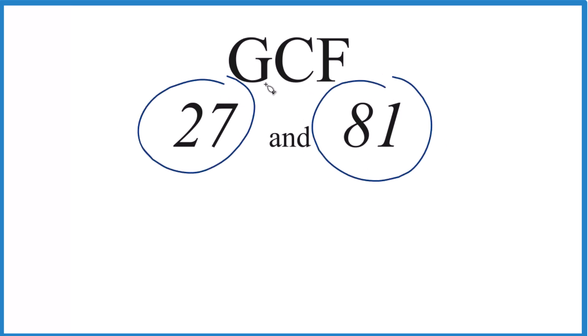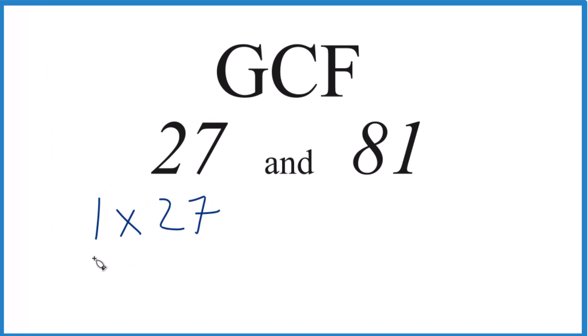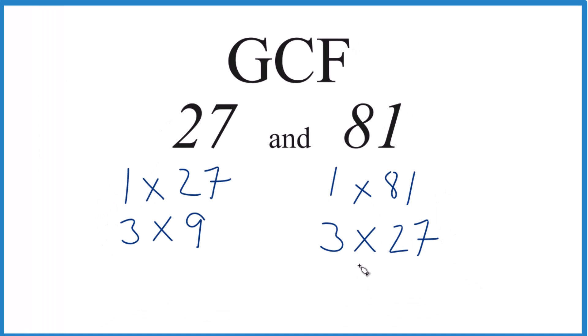For 27: 1 times 27 equals 27, and 3 times 9. That works, but I don't think there are any more factors. For 81: 1 times 81, and then 3 times 27. I had to look that up before the video. 3 times 27 is 81. And then what else do we have? 9 times 9.